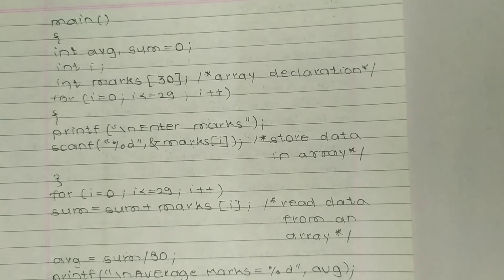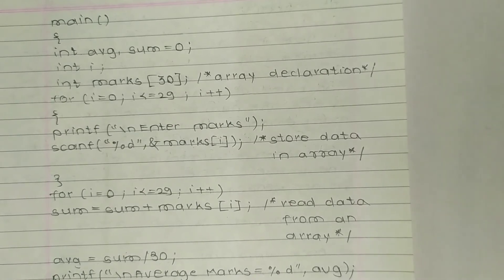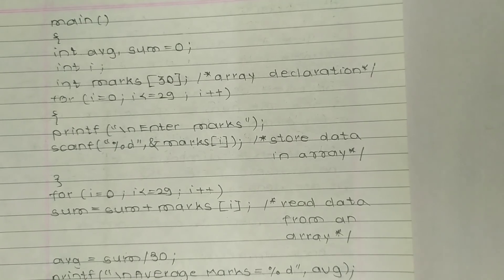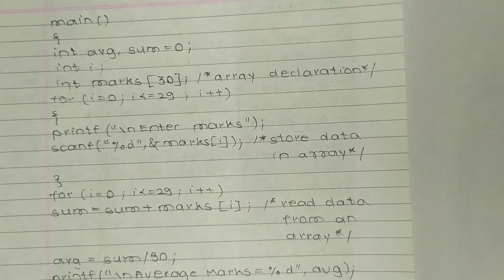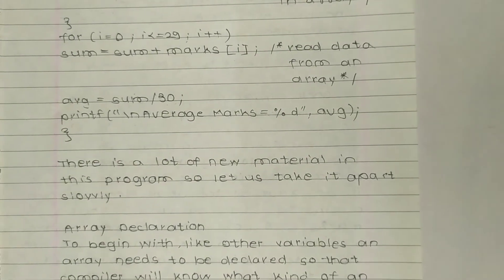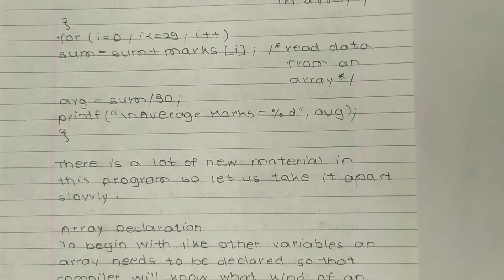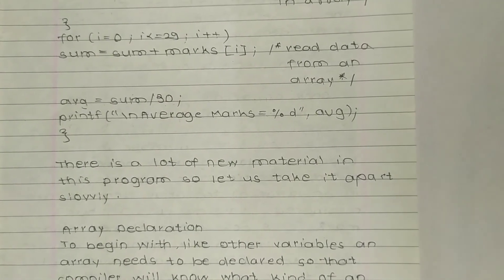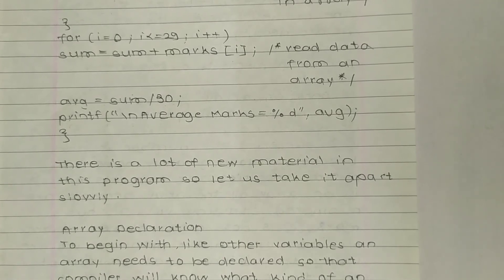So scanf("%d", &marks[i]) — ampersand marks[i] is used because marks is an array, and i corresponds to the loop variable already declared as an integer. This stores data in the array. Now a second for loop: for(i = 0; i <= 29; i++) sum = sum + marks[i], which reads data from the array.